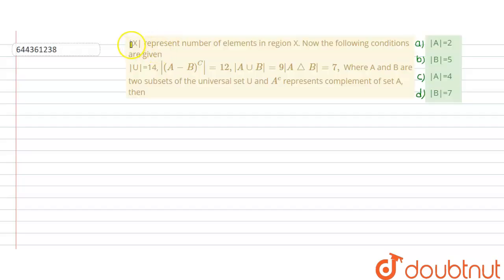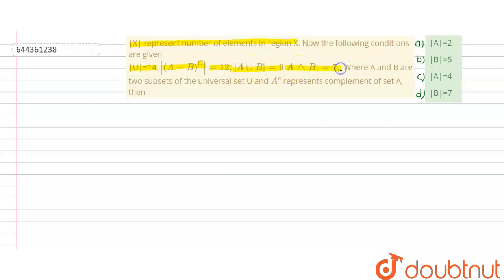Hello students. The problem states that mod X represents the number of elements in region X. The following conditions are given: mod U equals 14, mod of (A minus B) whole complement equals 12, mod of A union B equals 9, mod of A symmetric difference B equals 7, where A and B are subsets of the universal set U, and the superscript C represents the complement of a set.